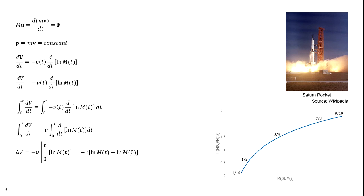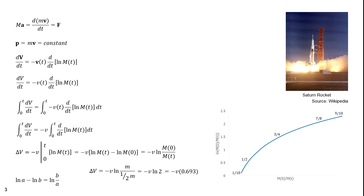That equals minus v times [ln(m(t)) − ln(m(0))]. Using the property that ln(a) − ln(b) = ln(a/b), delta v equals minus v times ln(m(0)/m(t)). If the rocket expels half its mass, it attains a delta v of minus v times ln(m / ½m), which equals minus v times ln(2), resulting in a delta v of minus v times 0.693.